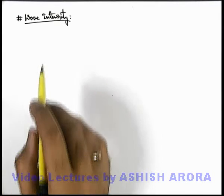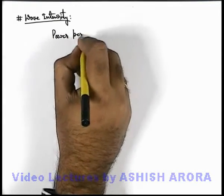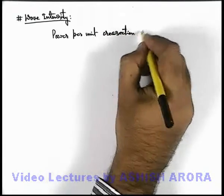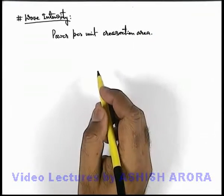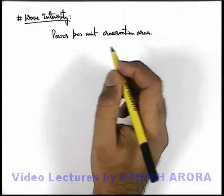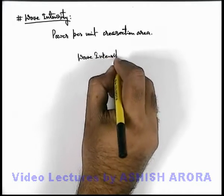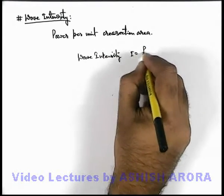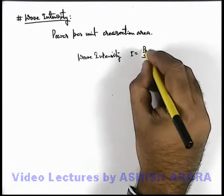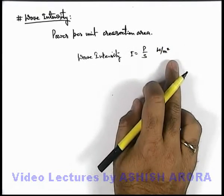Let us now continue our discussion on wave intensity. Wave intensity is defined as power per unit cross-sectional area — this is the cross-sectional area of the region in which the wave propagation is taking place. As we studied the power P previously, we can directly write the wave intensity I as P divided by S, where S is the cross-sectional area through which the power P is propagating. Its units are watts per meter squared.